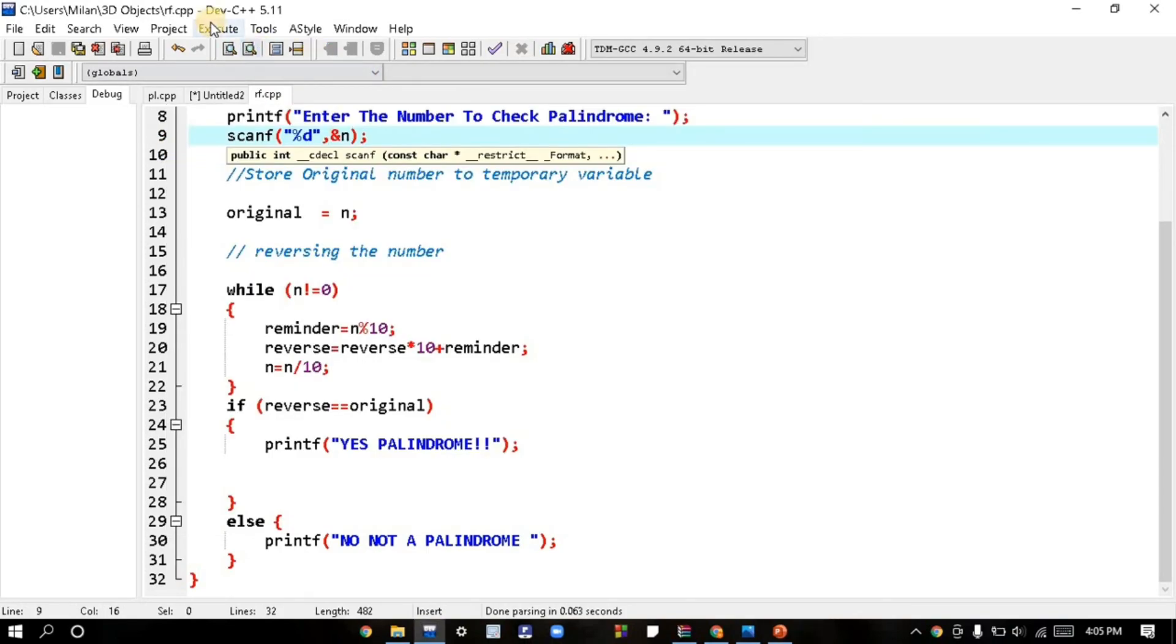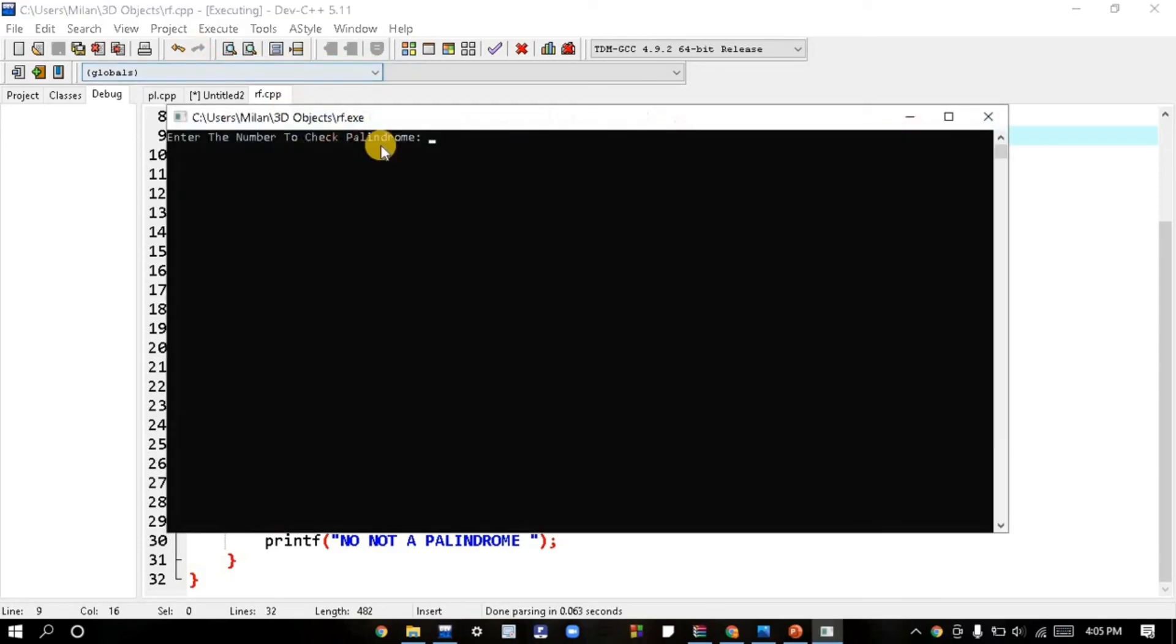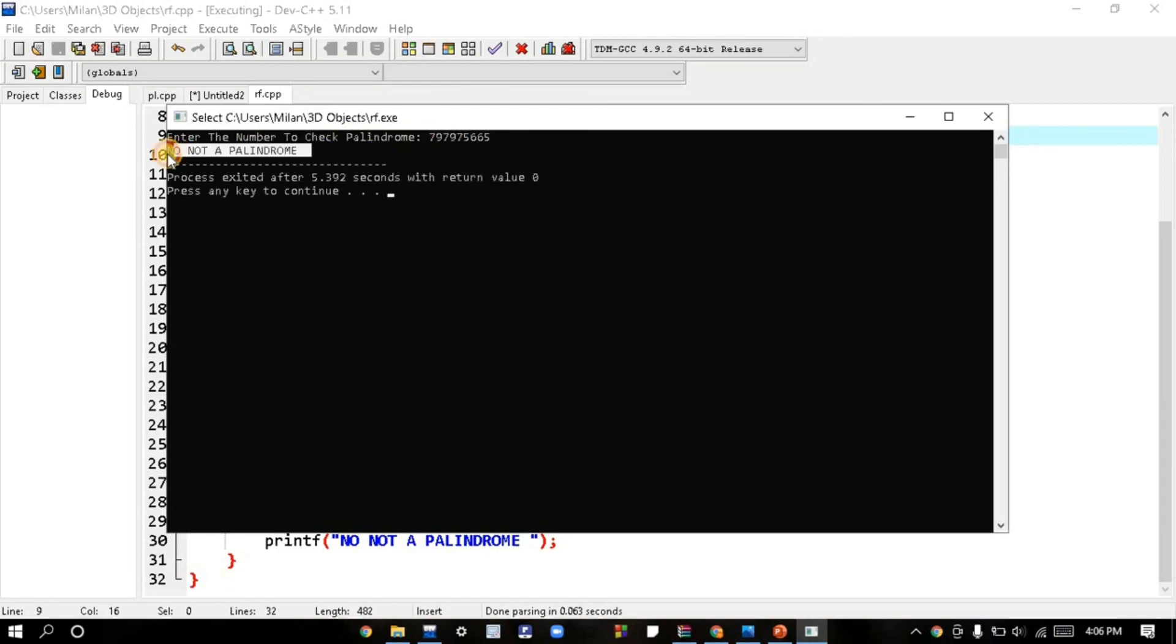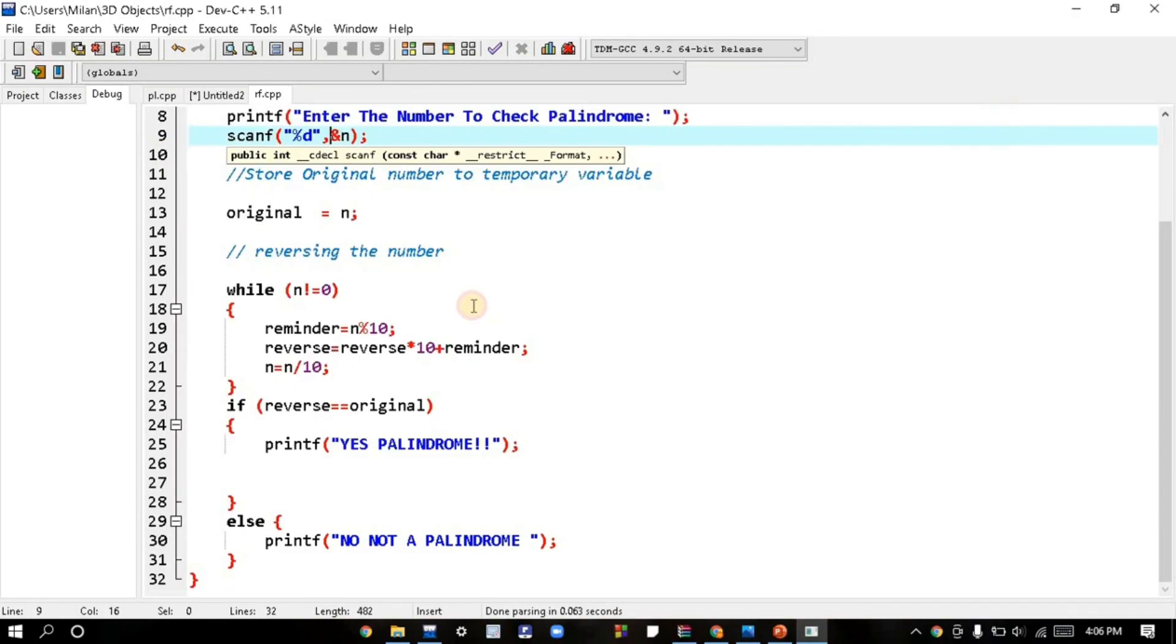Now let's test a non-palindrome number. I'll enter a random number here. We can see: 'This is not a palindrome number.' This is how we check palindrome numbers. Thank you for watching, have a great time, and subscribe.